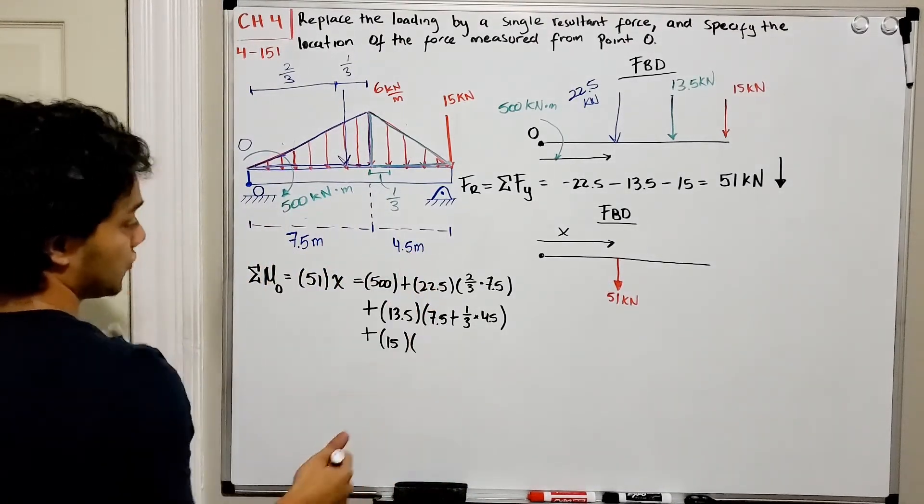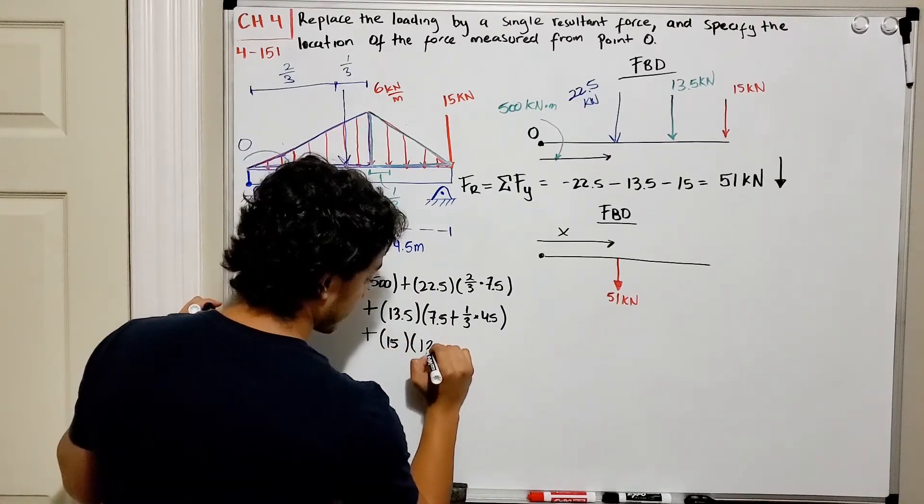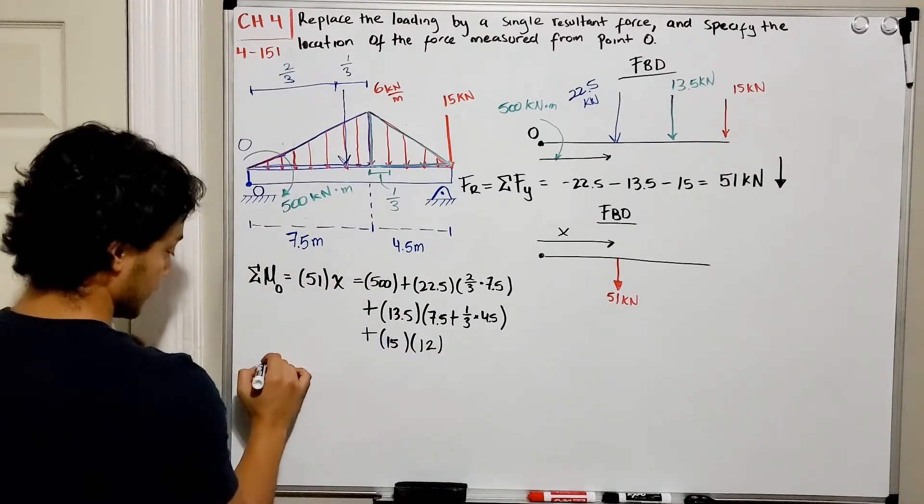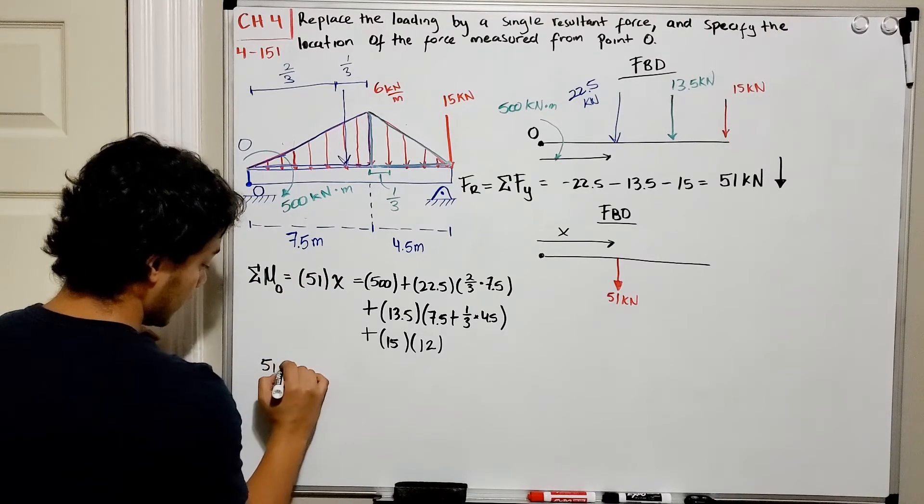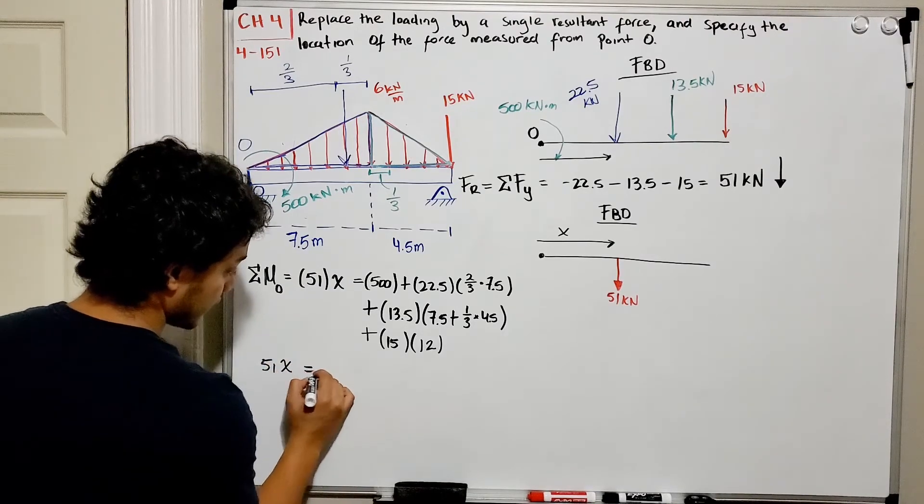Plus last our 15 kN, so we got 15 kN multiplied by the distance which is 7.5 plus 4.5, that should give me a total of 12. And let's see what this is equal to.